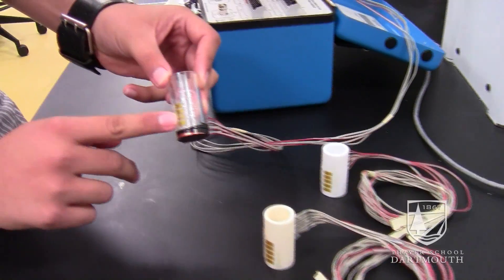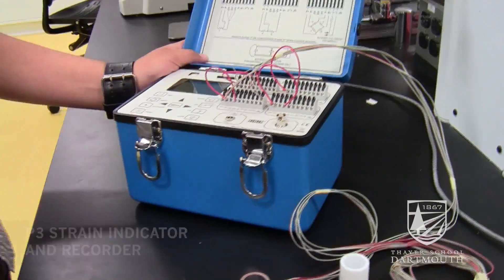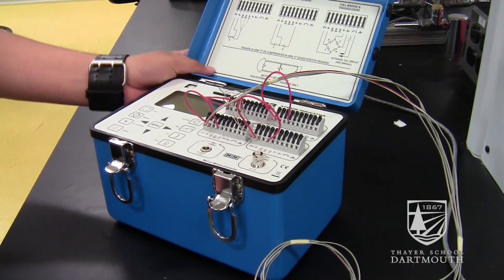Here are the strain gauges we use to measure the strain along the mold. We use a P3 strain indicator and recorder to measure four different channels.